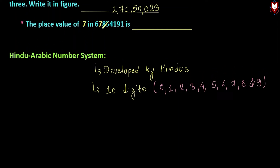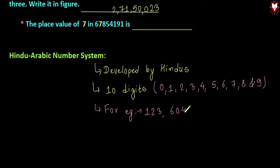So, if we have 10 digits in the Hindu Arabic number system — for example 1, 2, 3, 6, 0, 4, 1 and so on — even with just 10 digits we can represent any number using the Hindu Arabic number system.